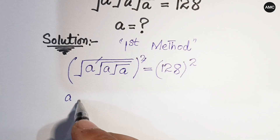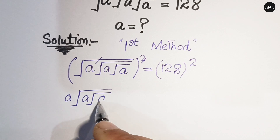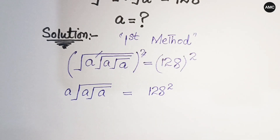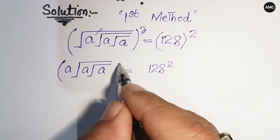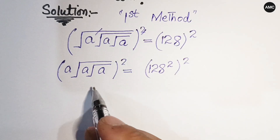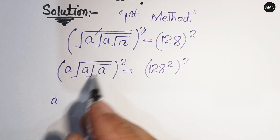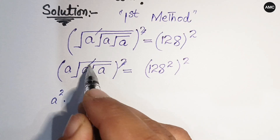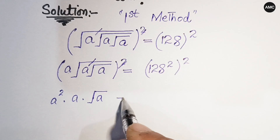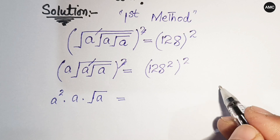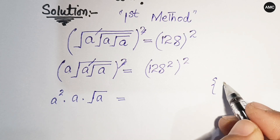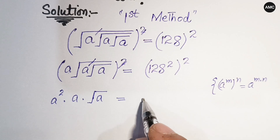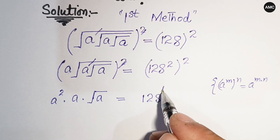We get a times square root of a times square root of a equals 128 squared. Now taking square again on both sides, we get a squared, and this square cancels with the square root, giving us a times square root of a. We can use the exponential property: (a^m)^n = a^(m×n), so 128 squared squared gives 128 to the power 4.